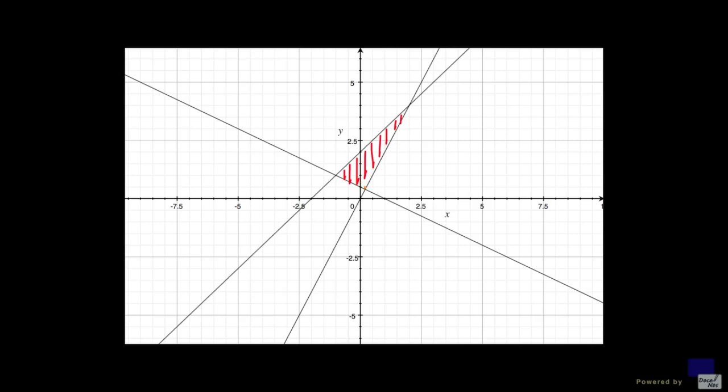And as you can see, the point (0, 1) is in this shaded region. And there are infinitely many values for x and y that will satisfy all three inequalities.